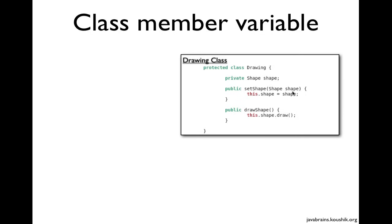This setter can accept a circle, a triangle, or tomorrow a pentagon or hexagon - as long as it's a shape, it'll accept the object and set it as a member variable. Then I have a drawShape method which just calls the draw method of whichever shape has been set. Note that this does not do an initialization - you don't see a new shape, a new triangle, or a new circle here. The drawing class assumes that somebody is going to instantiate that object and provide it to this class.